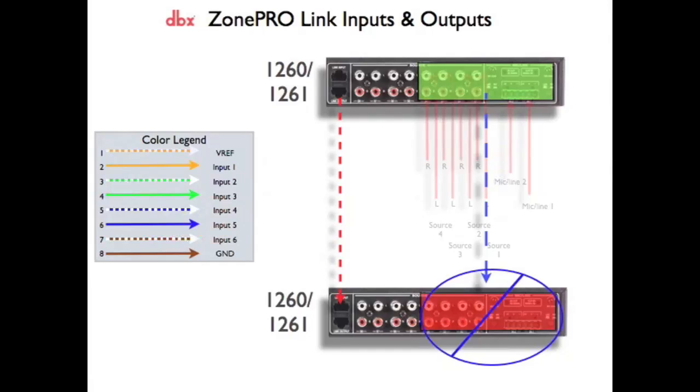However, there are jumpers on the main board for enabling or disabling the Link Input or Link Output function for the first two mic line inputs. From the factory, these jumpers come pre-configured in the enabled position.